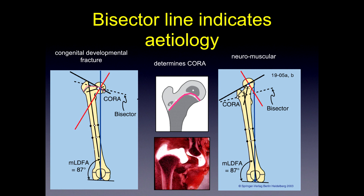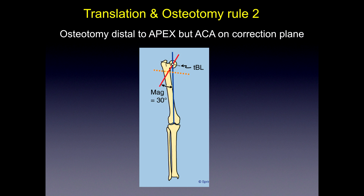The proximal femoral physis often indicates the etiology. Coxa vara tends to be developmental or congenital, occasionally fracture, whereas in neuromuscular conditions you tend to have valgus — and that reflects where the apex of your deformity is and your transverse bisector line. Osteotomy rule 2 is to rotate at the correction plane or apex of deformity, but the osteotomy must be distal. With the physeal line and pathology in the proximal femur, we can't do an osteotomy in the femoral head — it has to be more distal, and that means you'll require a certain amount of translation to realign the axes.